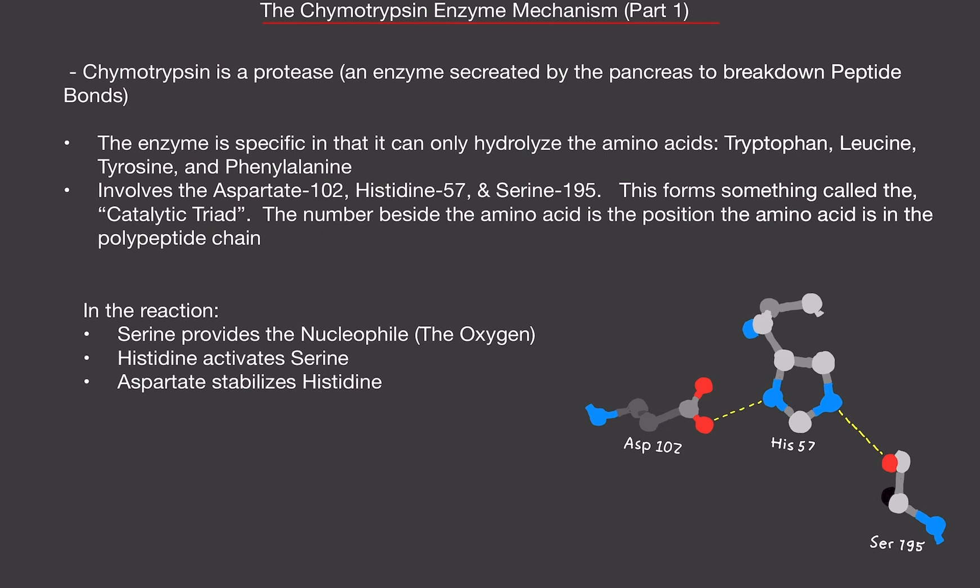So these three amino acids form something called the catalytic triad. Just a fancy way of basically saying three amino acids do something. So in this reaction, serine provides the nucleophile, which is the oxygen. So that's going to be the one doing all the attacking. Histidine and aspartate basically just support serine in its efforts to react.